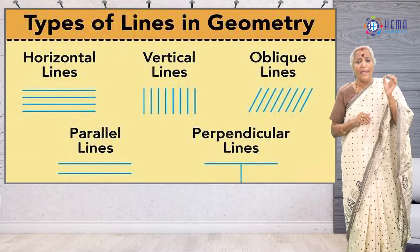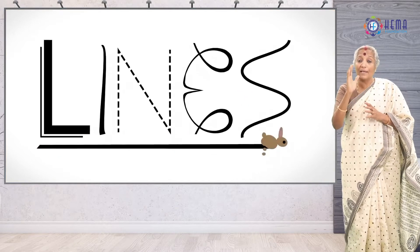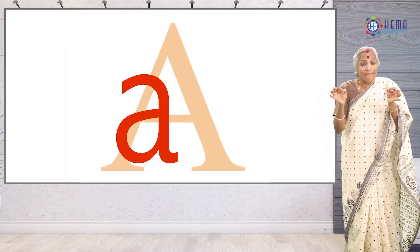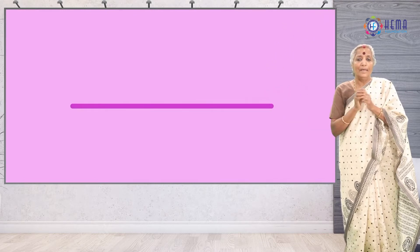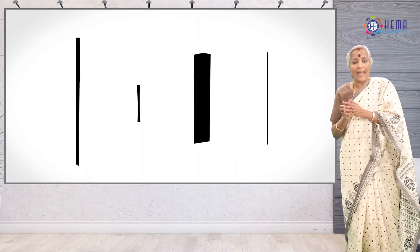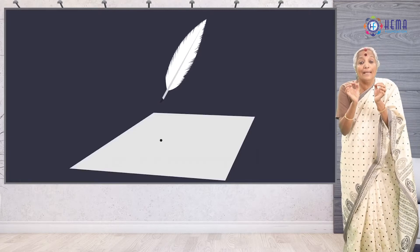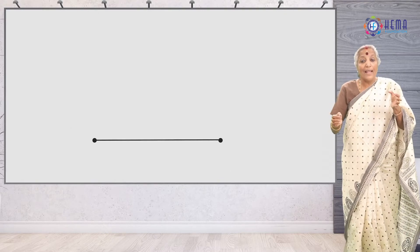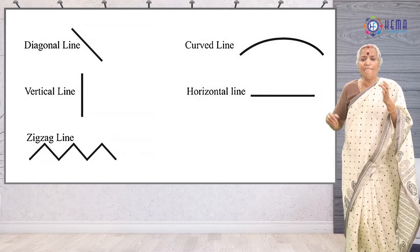These lines play an important role in math. Lines are an idealization of such objects, which are often described in terms of two points or referred to using a single letter. A line is a straight one-dimensional figure having no thickness and extending infinitely in both directions. Euclid defined a line as a breadthless length, and a straight line as a line that lies evenly with the points on itself.